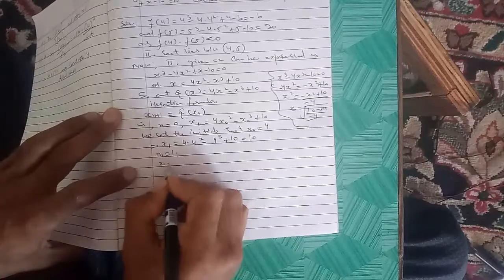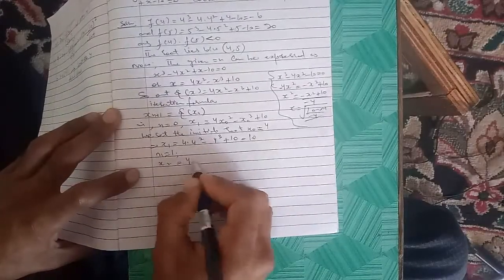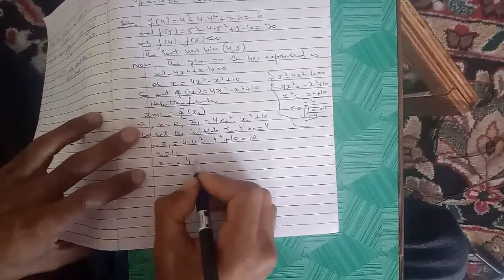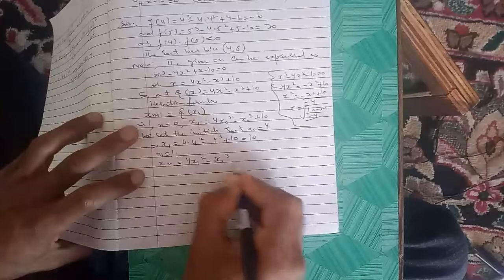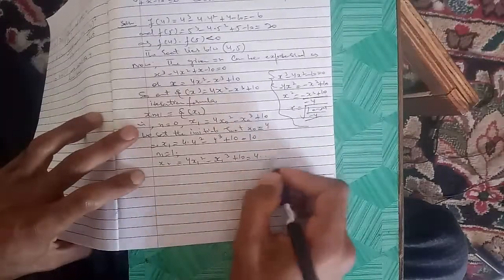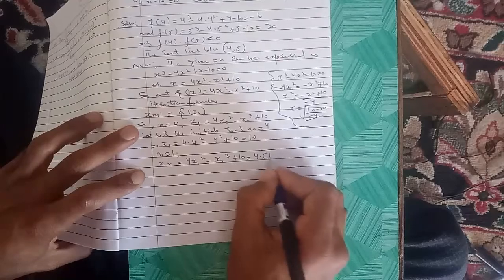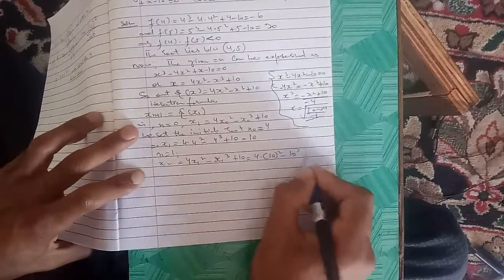In the same way, by putting n equals 1, we get x₂ equals 4(x₁²) - (x₁)³ + 10, which equals 4(10²) - 10³ + 10, which comes out to be -590.